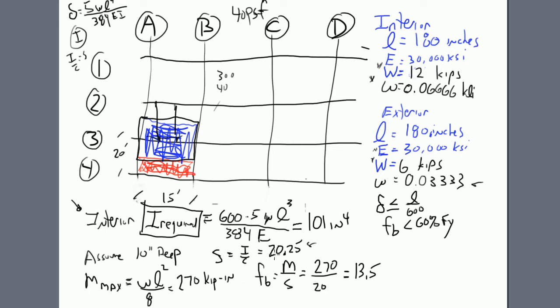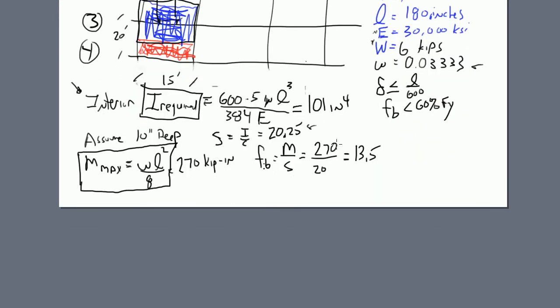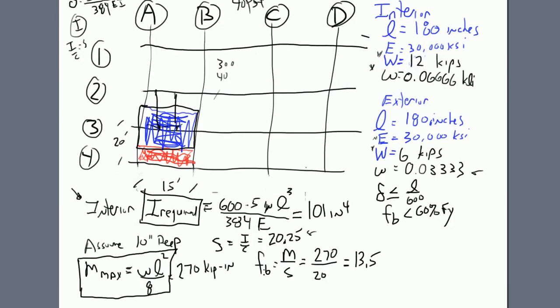Now how do we figure out the bending stress? We need to know the maximum interior moment. We know the maximum moment for a simply supported uniformly loaded beam is wL² over 8. So 0.66666 times 180 times 180 over 8 gives you 270 kip inches. The formula for bending stress is the moment divided by the section modulus, so we get 13.5 ksi. We know this is less than or equal to 60% of 36 ksi, which is 21.6 ksi, so we are way within the stress criteria.